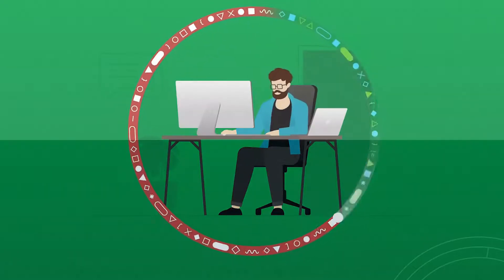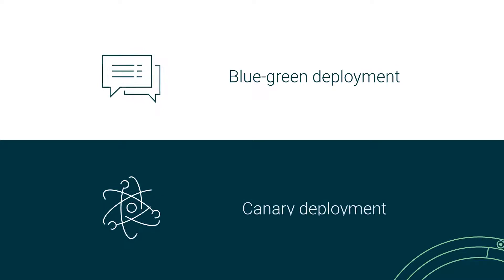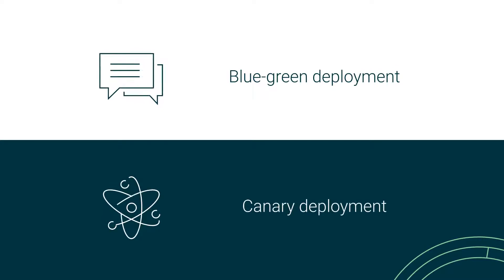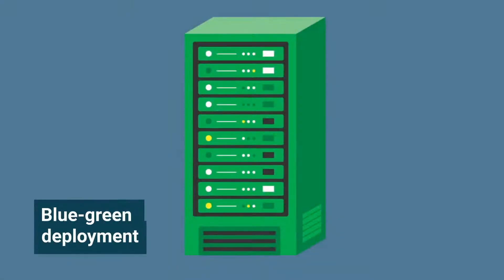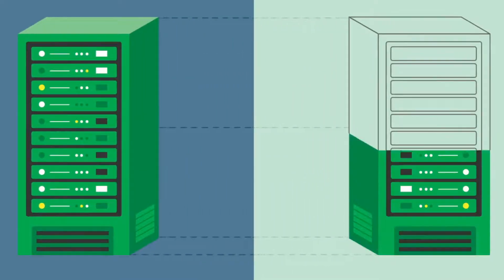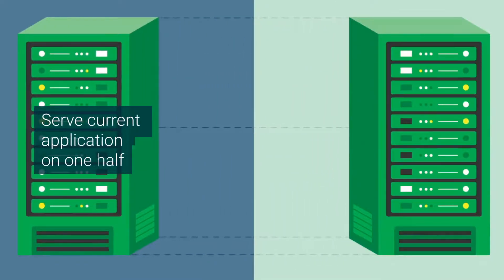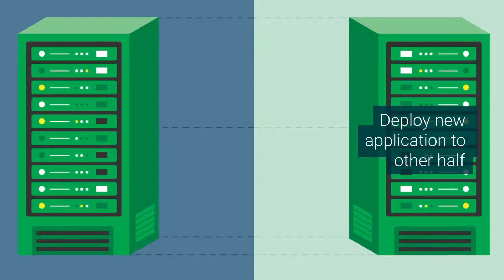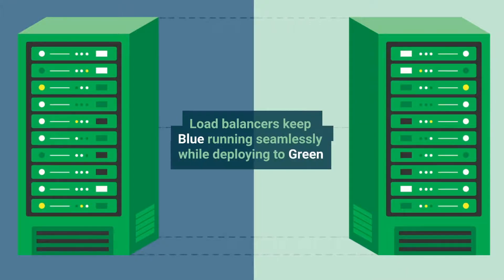Two common deployment configurations that can virtually eliminate downtime are blue-green deployment and canary deployment. Blue-green deployment, the more common of the two, splits your application environment into two equally sourced sections: blue and green. You serve the current application on one half of your environment, blue, using your load balancer to direct traffic. Then you deploy your new application to the other half of your environment, green, without affecting blue.